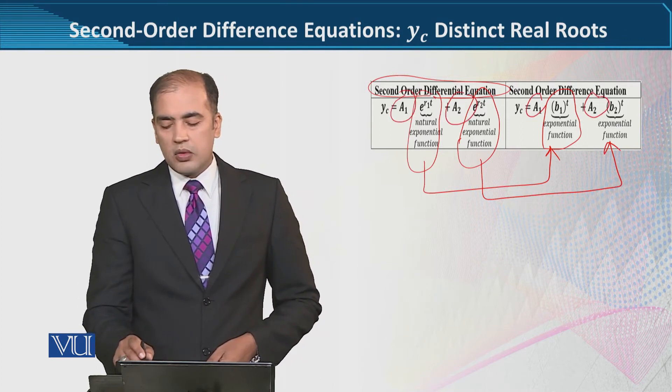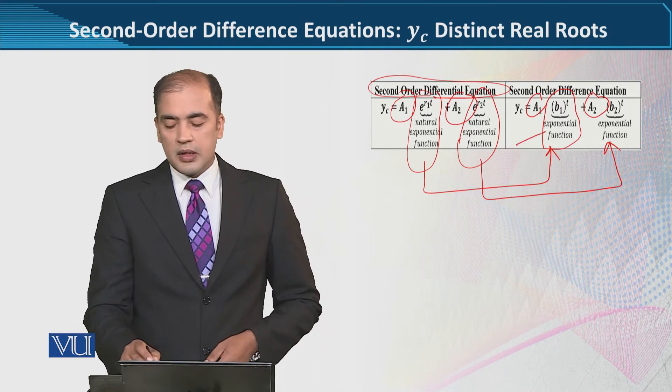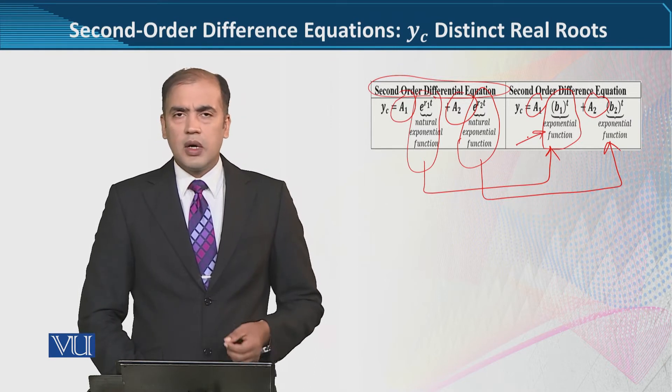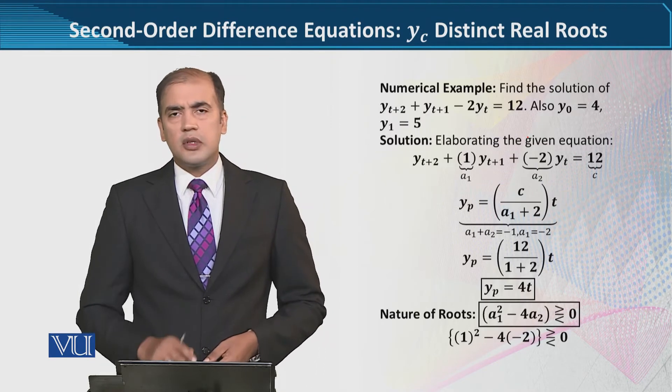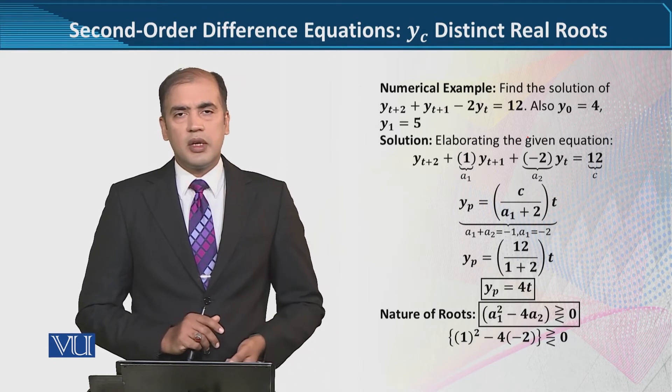Here we will also have A1, A2, and the natural exponential function, we will have just the exponential function. So you can see, we have B1 and B2 represented. So instead of only one B, we have B1 and B2, and there are two arbitrary constants.